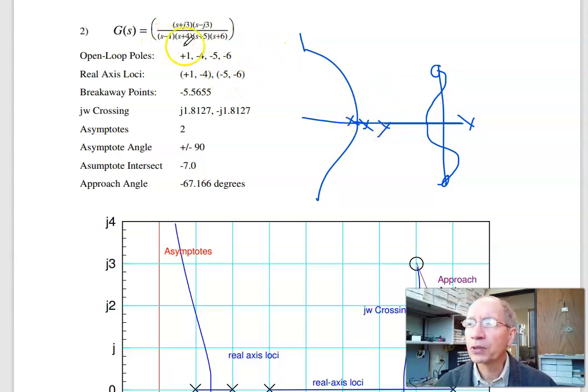The real axis loci is when there's an odd number of poles to the right. That's between plus 1 and minus 4, minus 5, minus 6. Breakaway point is right here, and there's another breakaway point right there. It's minus 5.5, and I missed this one.